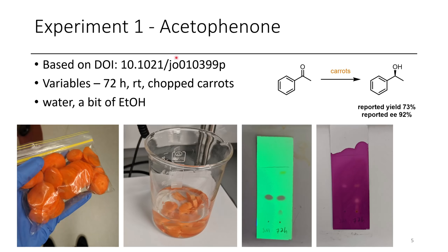The first experiment was done with acetophenone. The first Discord member did this reaction where they cut up a bunch of carrots and mixed it in a beaker for 72 hours at room temperature, adding a little bit of ethanol to help dissolve the ketone — if the ketone's not very soluble, it won't work as well. They just stirred this for several days at room temp. We're not going to get a reported isolated yield, but it's an amazing effort to show whether the chemistry works.